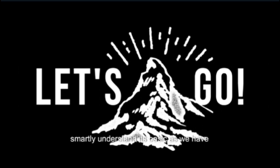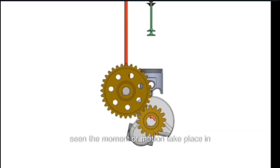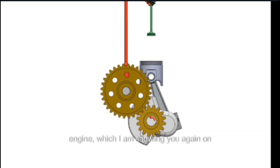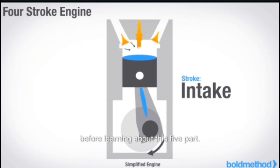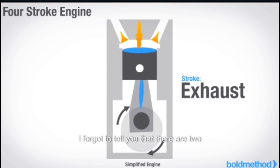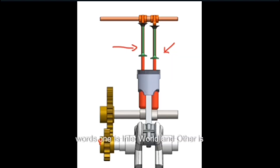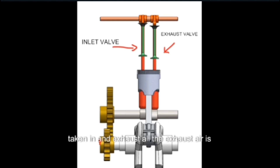It is difficult to understand, so let us go in depth of engine working and smartly understand its basics. As we have seen, the movement or motion that takes place in the engine is carried out in mainly five parts. Before learning about these five parts, I forgot to tell you that there are two valves: one is the inlet valve and the other is the exhaust valve. We can understand the meaning of these valves by their names — the inlet valve is where air is taken in, and through the exhaust valve the exhaust air is taken out.